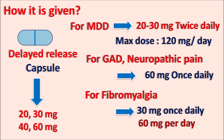In summary, Duloxetine is an SNRI — serotonin norepinephrine reuptake inhibitor — that inhibits the reuptake of both norepinephrine and 5-HT, increasing their levels within the CNS, resulting in antidepressant activity and reducing pain stimulation. This drug is useful in the treatment of major depressive disorder, generalized anxiety disorder, fibromyalgia, diabetic peripheral neuropathic pain, and chronic musculoskeletal pain disorders.